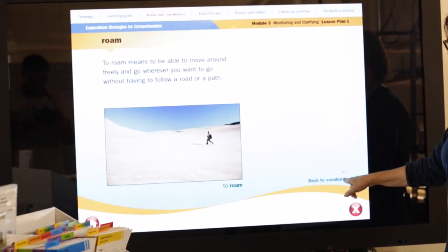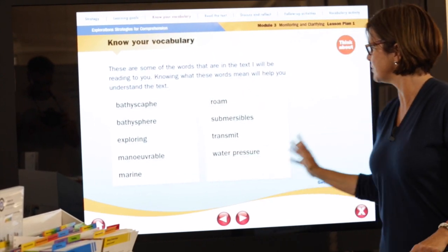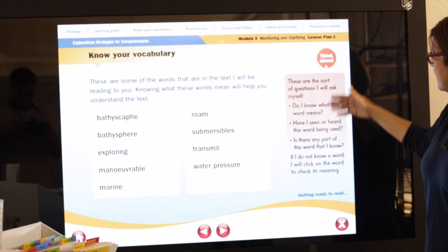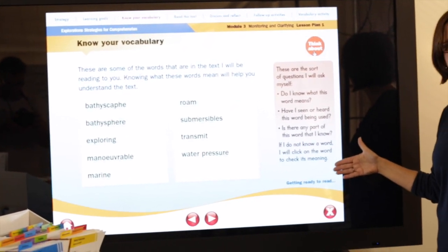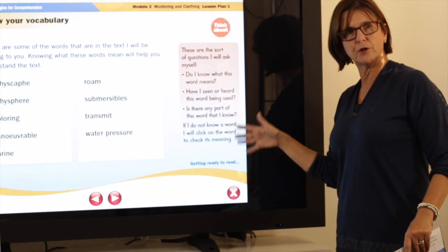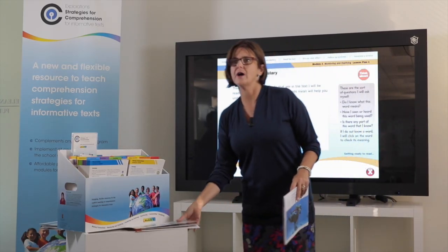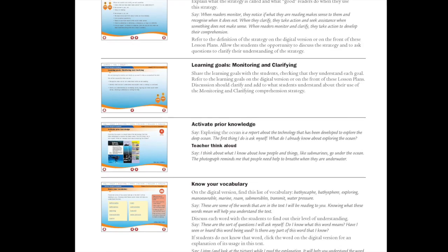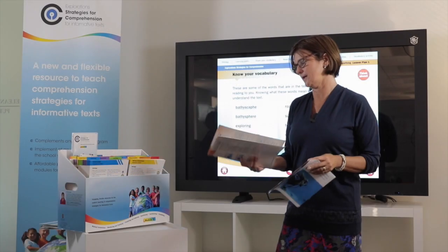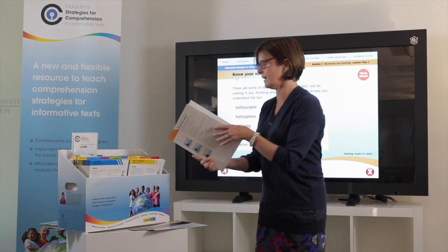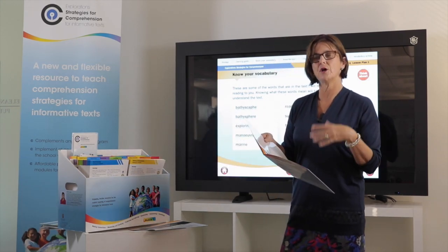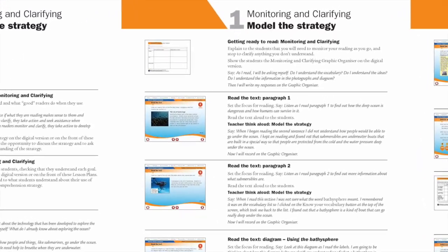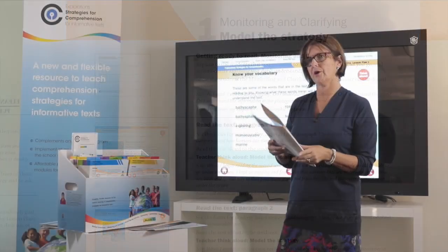Clicking back to the vocab list, you'll see there is other vocabulary for students to think about too. On the digital version there is a 'Think About' button — clicking it takes students through things to consider when they encounter words they're unsure of. At this point, students have activated prior knowledge about content, checked their knowledge of text structure, and checked vocabulary. So they are ready to read. We introduce the graphic organizer and reintroduce the strategy so students see what they'll be doing.